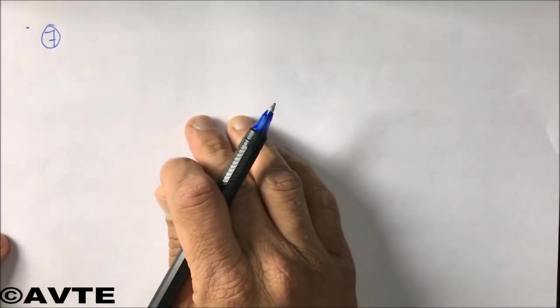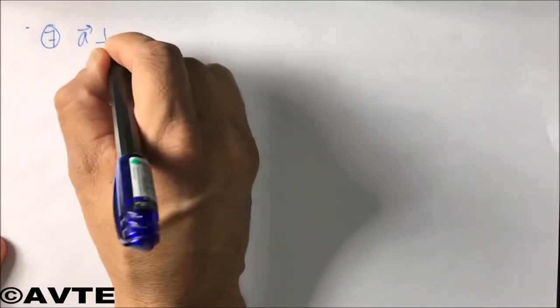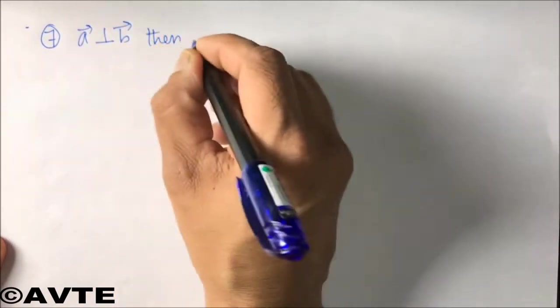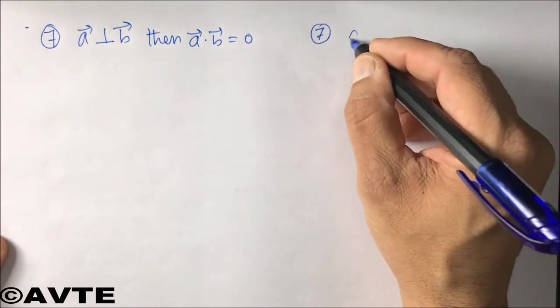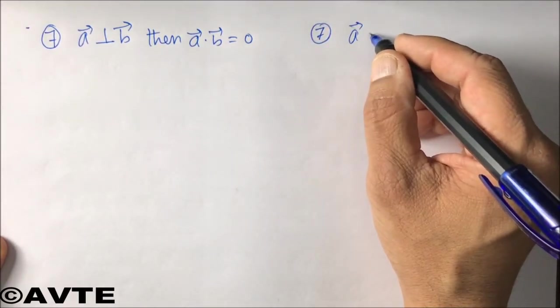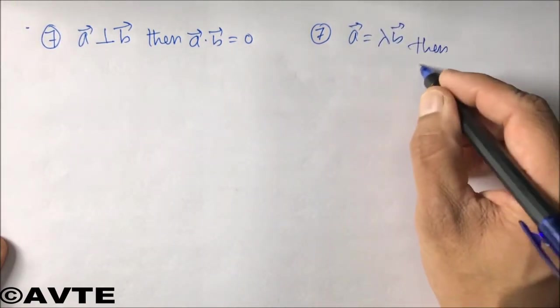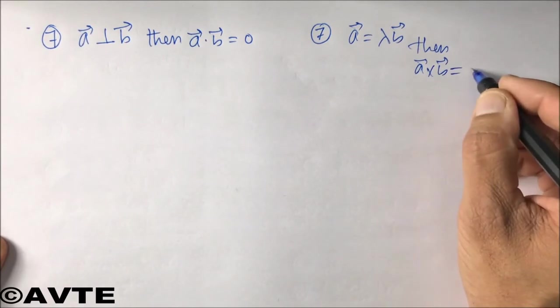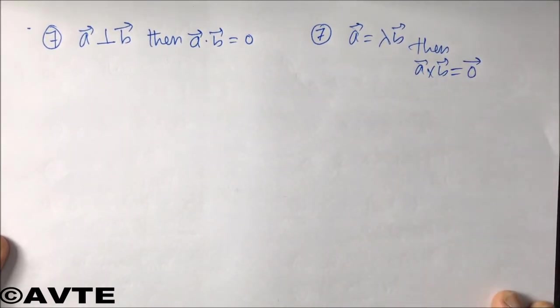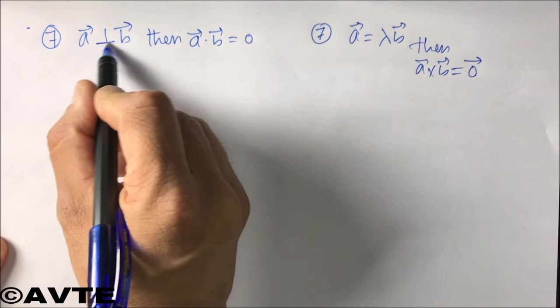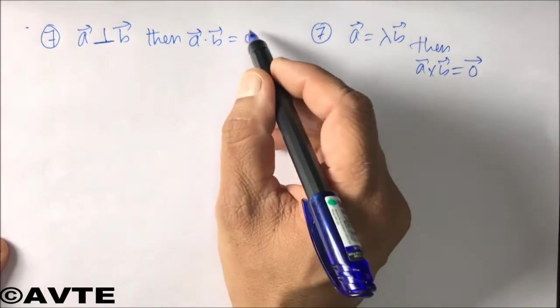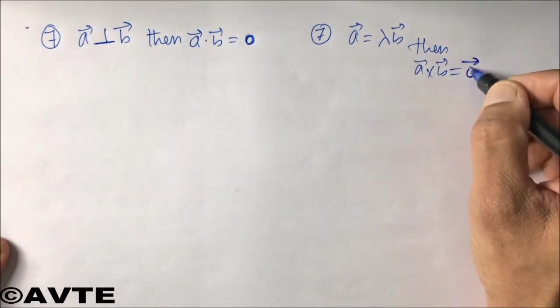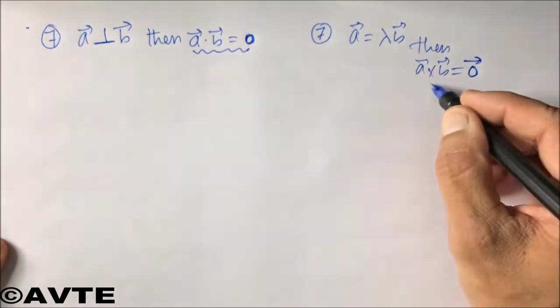Moving further, if a is perpendicular to b, then a dot b is zero. Whereas in case of cross product, if a is collinear with b, then a cross b is zero, because the angle then between them will be either zero degree or 180 degrees. And in both cases, sine will be zero. And when a is perpendicular to b, the angle between them is 90 degrees and cos 90 will be zero. Well, remember, I'm writing zero here, but I'm writing zero vector here. It is very important because this side is a scalar and this side is a vector.